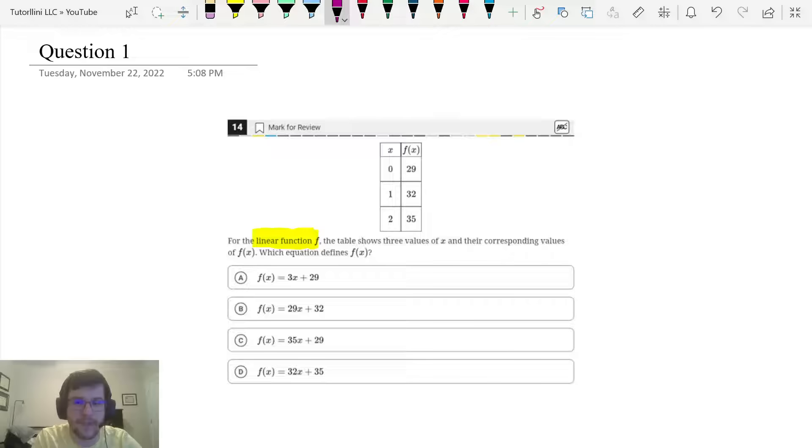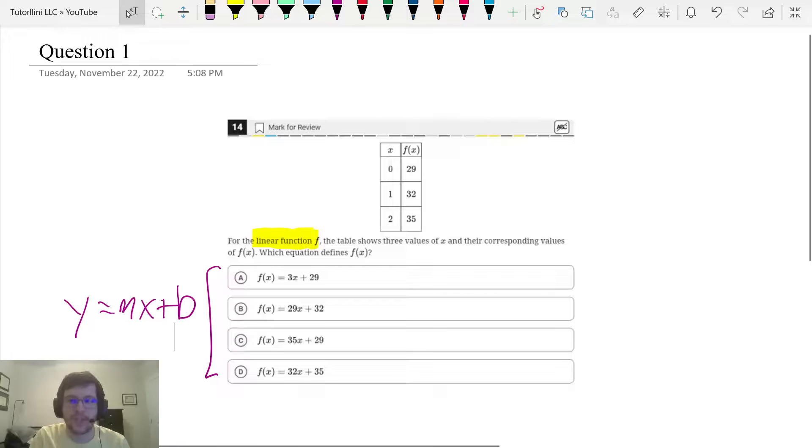We look at the answer choices and we recognize that all of these answer choices are in the form y equals mx plus b. That should look familiar to you if you've been studying for the test. Okay, so now we're gonna go to Desmos and type this table in. So let's do that.